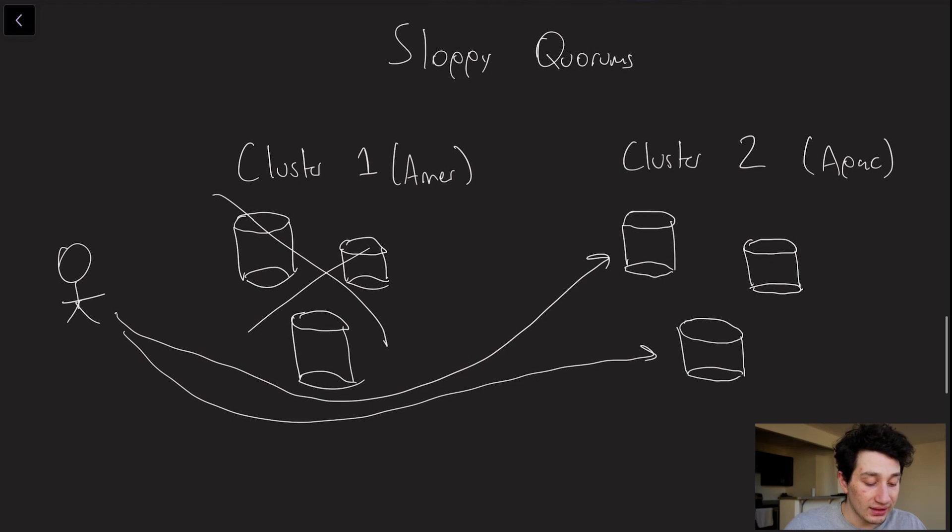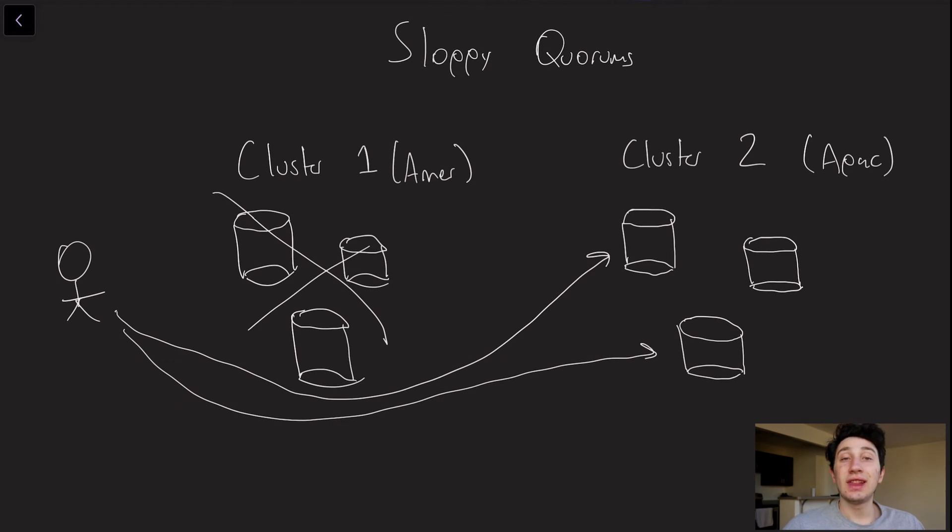And then one final case worth mentioning is something known as sloppy quorums. The gist of sloppy quorums is that oftentimes people have different database clusters. For example, if you have one in America for your North American users, and you have one in APAC for Asian and Australian users. Basically, the gist here is that sometimes one cluster in a geographical region can just go down for a variety of reasons. So you can see that's happened with cluster one.